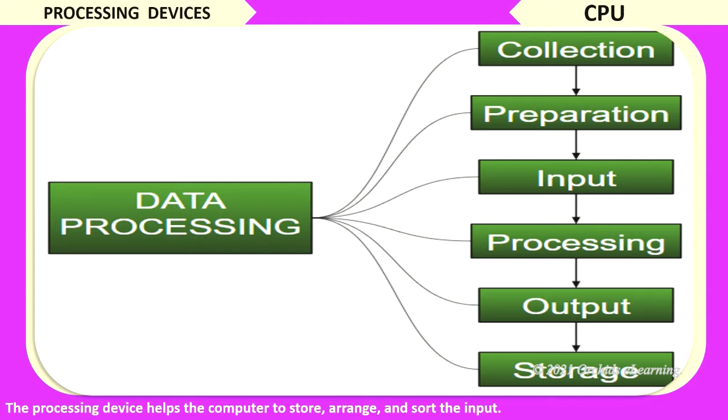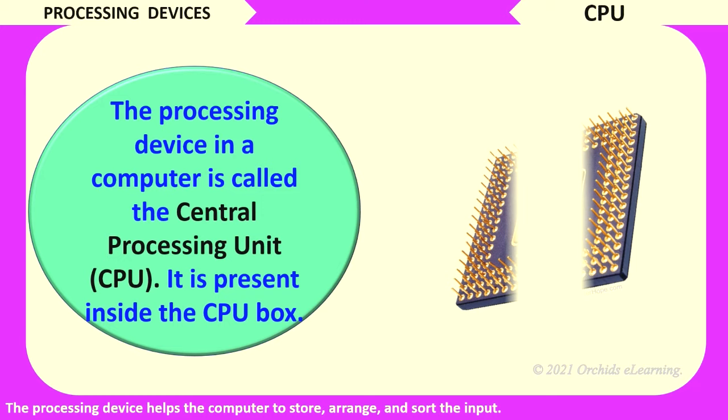Processing devices. The processing device helps the computer to store, arrange, and sort the input. CPU is a processing device of a computer. The processing device in a computer is called the central processing unit, CPU. It is present inside the CPU box.